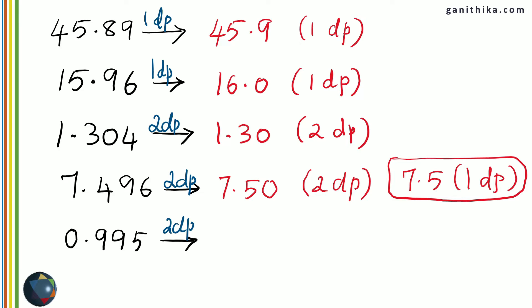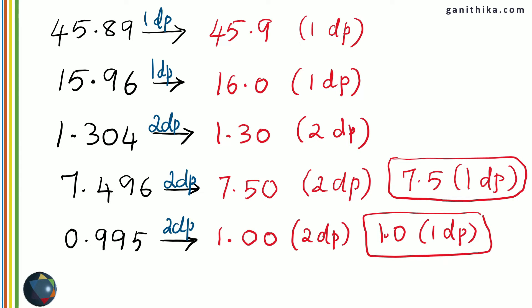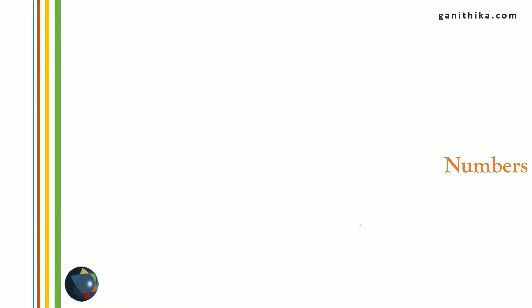The next number: 0.995 to 2 decimal places. Looking at the third decimal place which is 5, it adds 1 to the previous number 9, making it 10. The carry-over of 1 is added to the previous 9 again, and the carry-over is then added to the 0 in the beginning. Therefore the answer is 1.00 to 2 decimal places. You can also give 1.0 if rounding to 1 decimal place, since the second decimal place is 9.